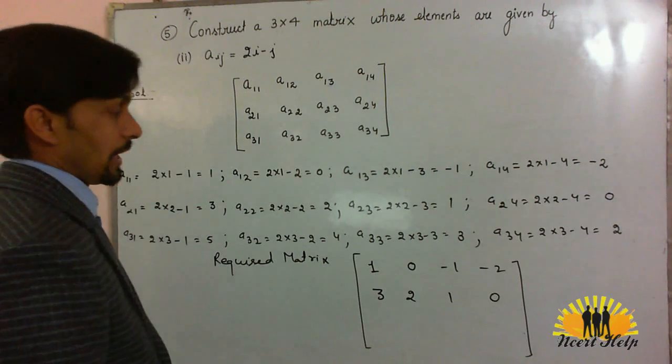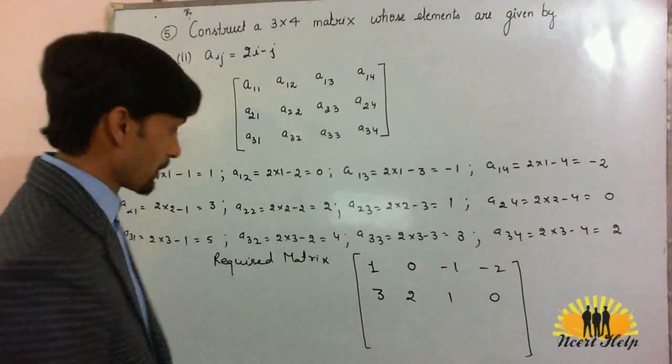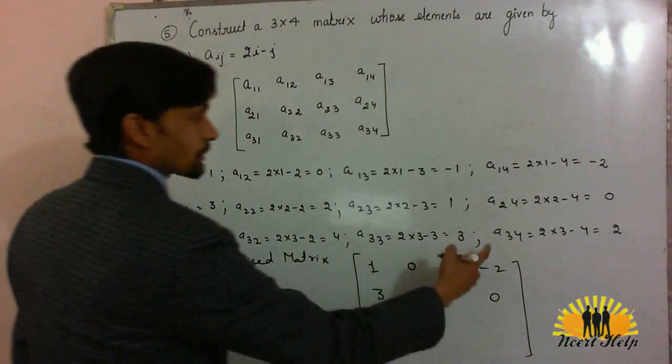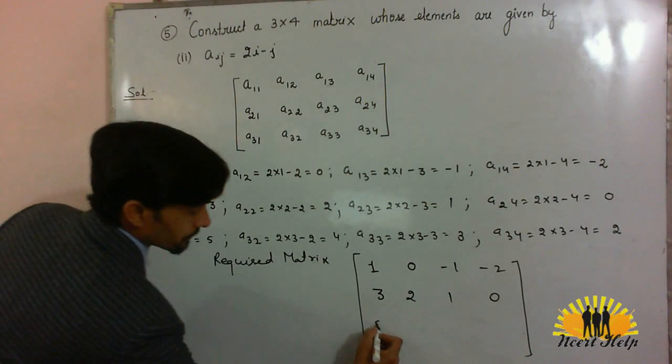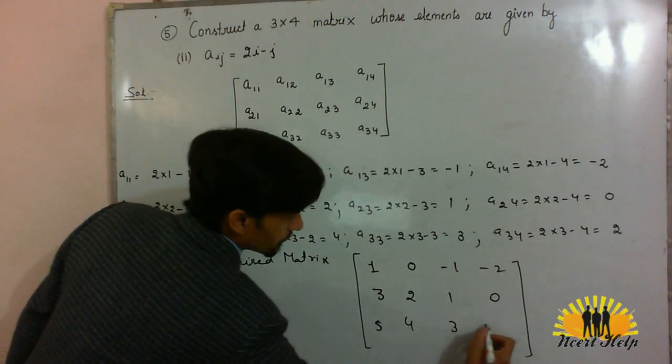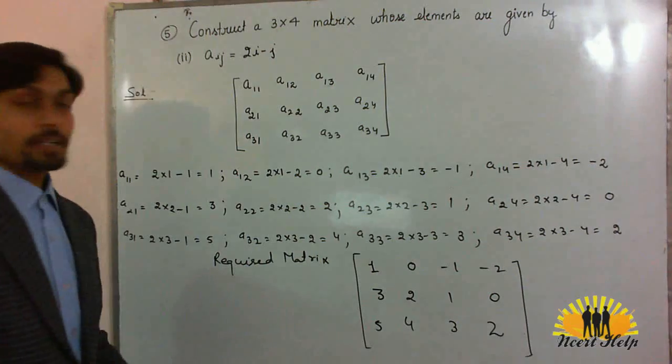And the elements of third row are 5, 4, 3, 2. This is our required matrix.